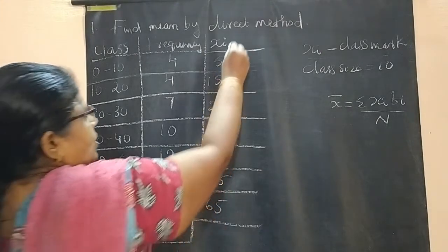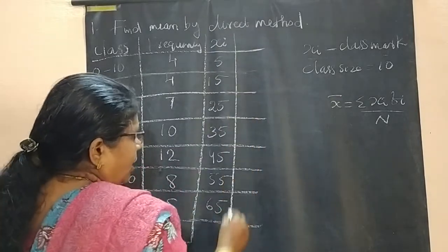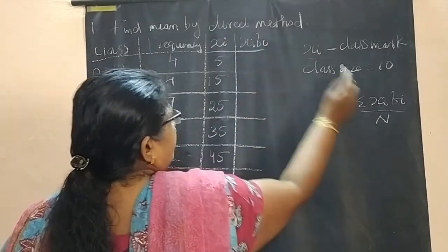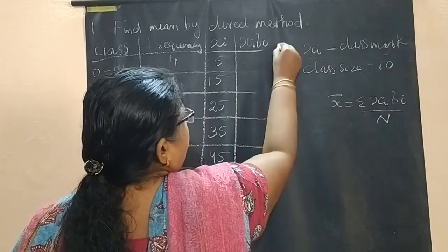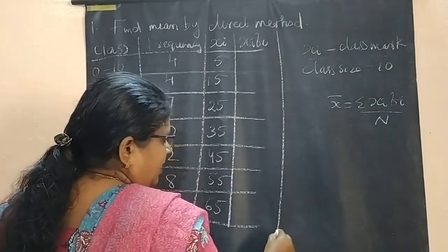Now, you have to find the next column, it is called xi·fi. You have to find xi·fi.